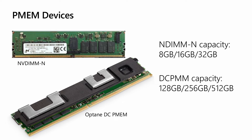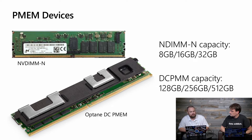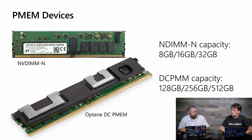Persistent memory devices are regular DIMMs that you fit into your server, coming in different capacities. NVDIMM-N, which is one type of persistent memory technology, comes in 8, 16, or 32 gigabyte DIMM capacity. The latest Intel Optane DC persistent memory comes in much higher capacities of 128, 256, or 512 gigabyte DIMMs.